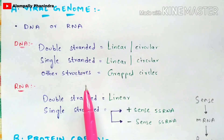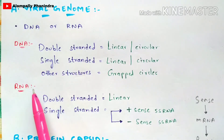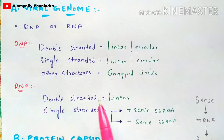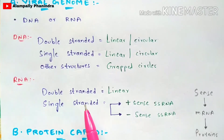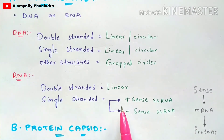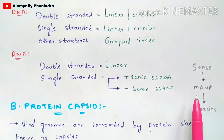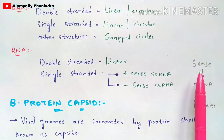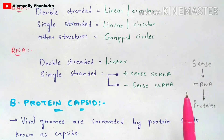Other DNA structures include geared circles. Many viral genomes also contain RNA as genetic material. RNA can be double-stranded or single-stranded. Double-stranded RNA can be in linear form. Single-stranded RNA is of two types: positive-sense and negative-sense. Sense refers to the strand that is present in the form of direct mRNA.